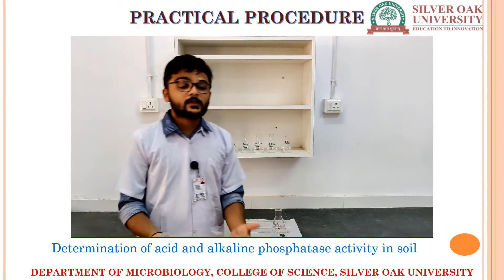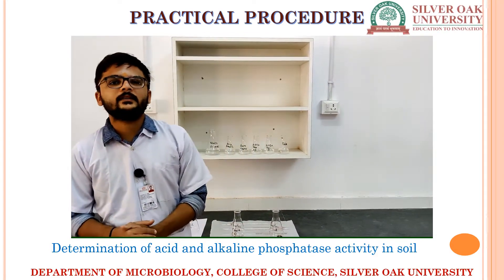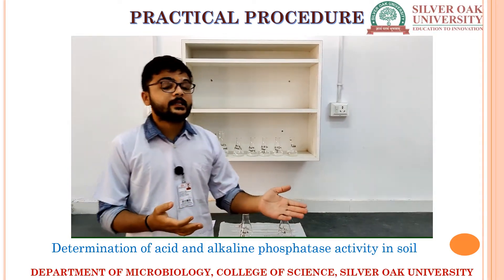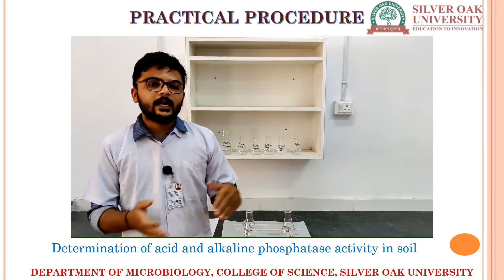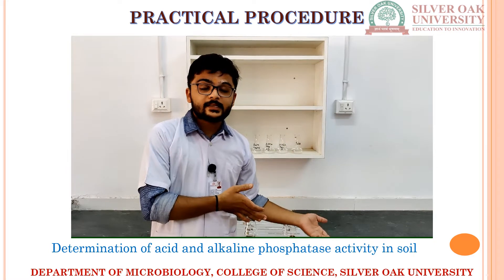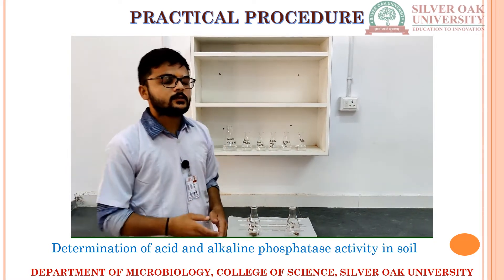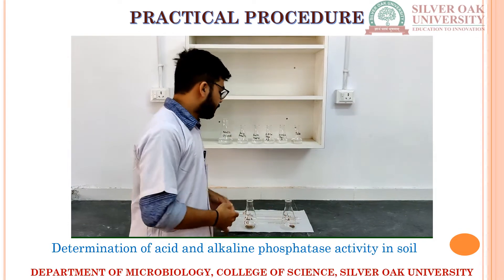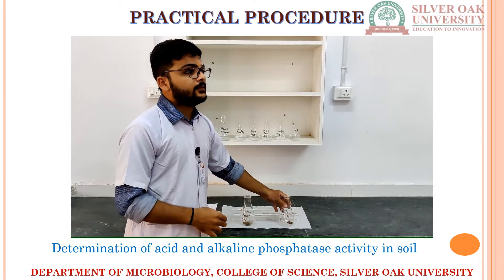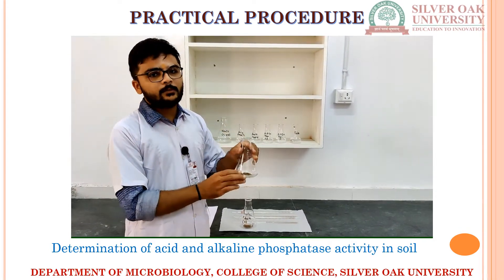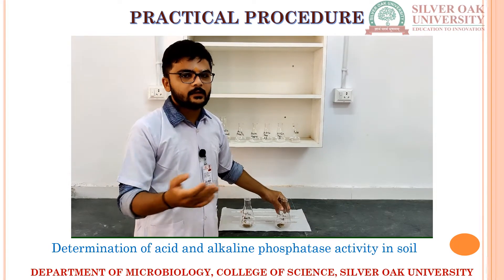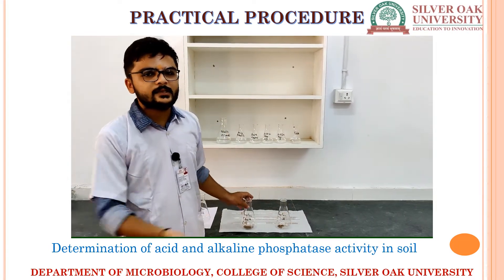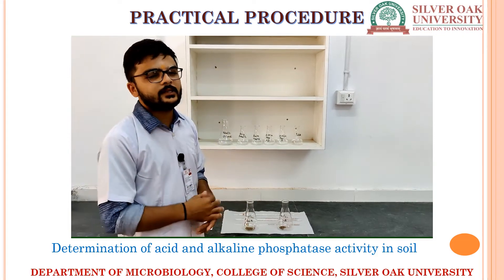For the procedure of checking phosphatase activity in the soil, we are analyzing two types of phosphatase activity: acidic phosphatase and alkaline phosphatase. We will create two systems for this, so we need two flasks. In each flask, we take 1 gram of soil. You can find soil from anywhere — from the rhizospheric area — and we just have to check the activity.